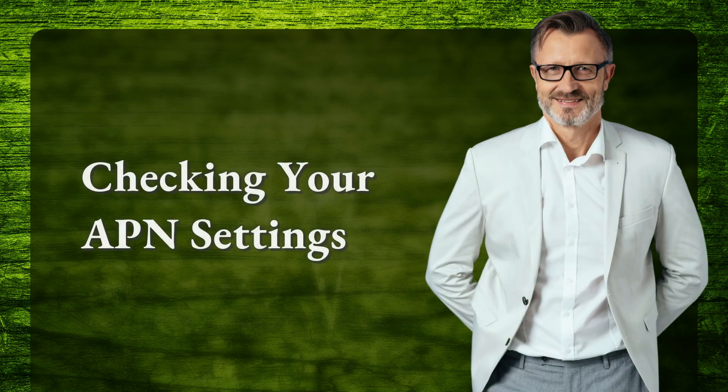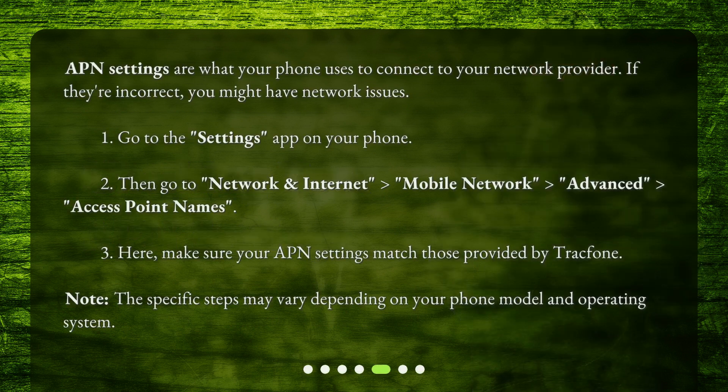APN settings are what your phone uses to connect to your network provider. If they're incorrect, you might have network issues. Go to the Settings app on your phone, then go to Network and Internet > Mobile Network > Advanced > Access Point Names. Here, make sure your APN settings match those provided by TrackPhone. Note: the specific steps may vary depending on your phone model and operating system.